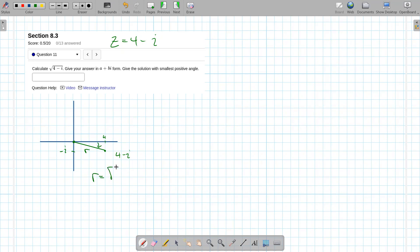The radius of that thing is just going to be the square root of four squared plus negative one squared, that's what 16 plus one is 17. So the square root of 17 is the radius for that in polar form.